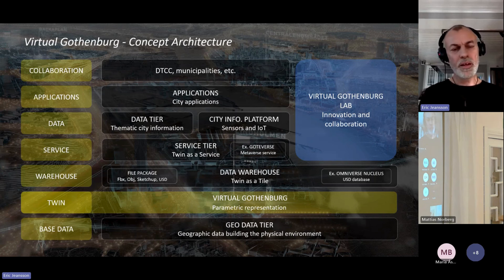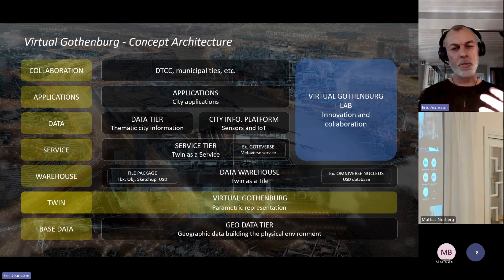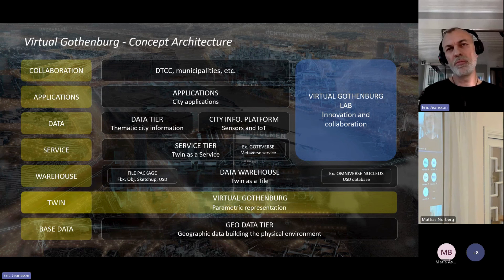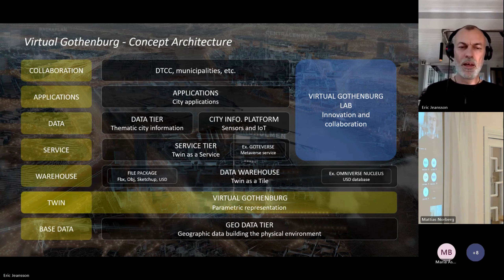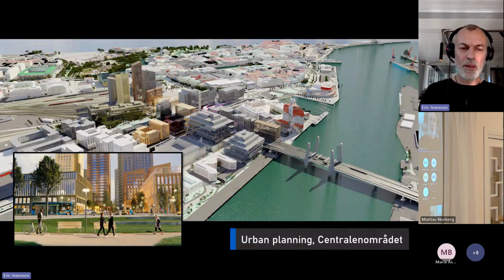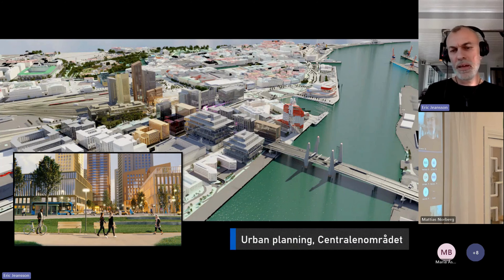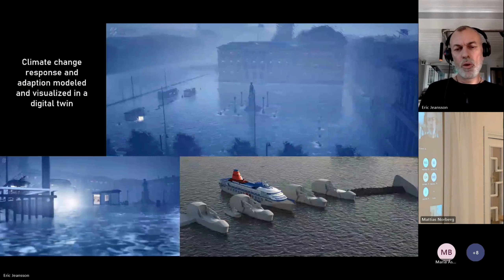This picture shows the conceptual architecture. We have base geographic data describing the physical environment, and with that data we create a parametric representation of the city called Virtual Gothenburg — our digital twin. We have a data warehouse where we can present data as different file packages that you can download. Then we have a service tier where we can add other kinds of data from our different departments and processes within the city into the digital twin. We can then create different applications and collaborate. We also have Virtual Gothenburg Lab as a testbed for innovation and collaboration together with industry.